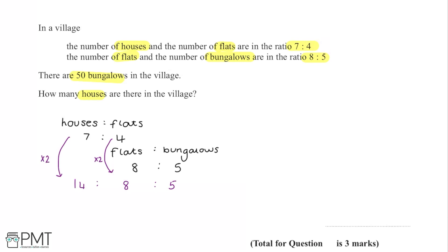Now we have a three-part ratio of houses to flats to bungalows: 14:8:5. The ratio of houses to bungalows can be read off by removing the flats, giving us 14:5. We're told there are 50 bungalows, so now we can scale up this ratio.